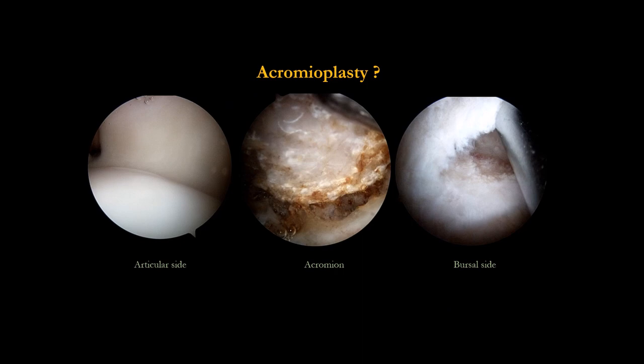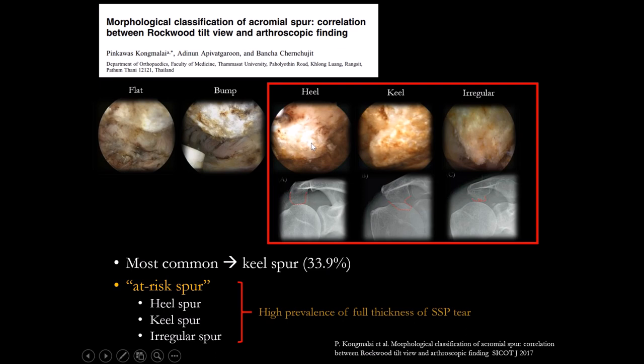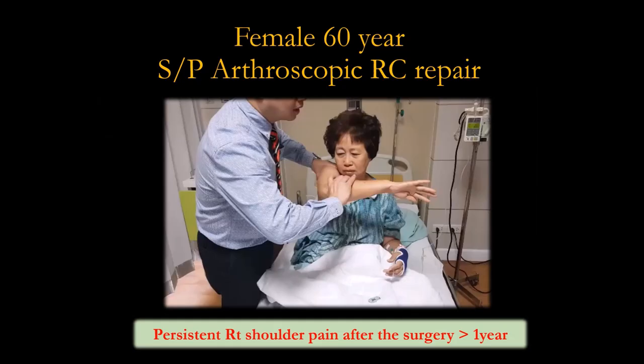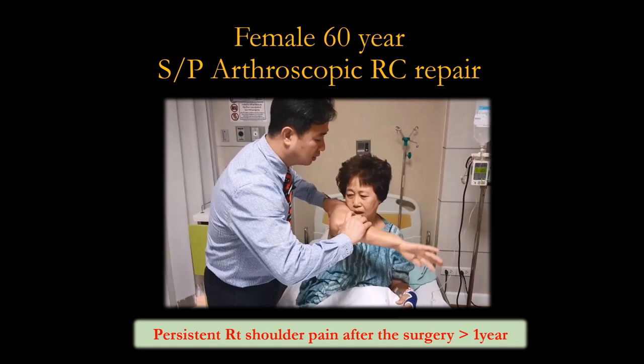This is my study — a morphologic classification of acromion spurs compared intraoperatively. We found that a heel spur, an irregular spur, or a fracture of the spur represents an acromion at risk. These three spur types indicate you should decompress.